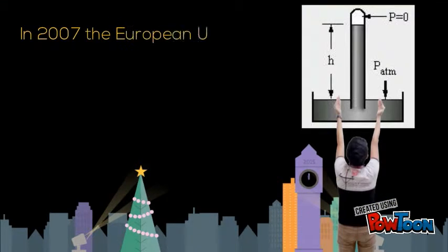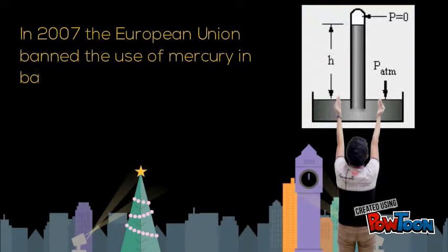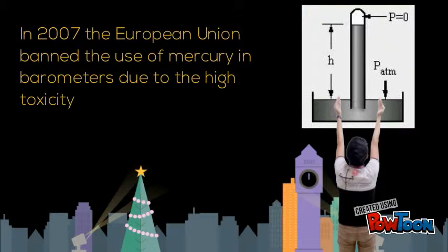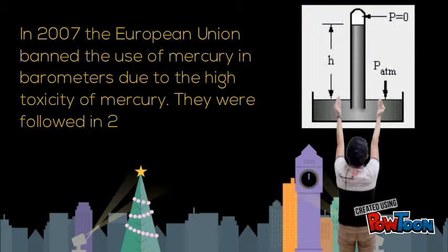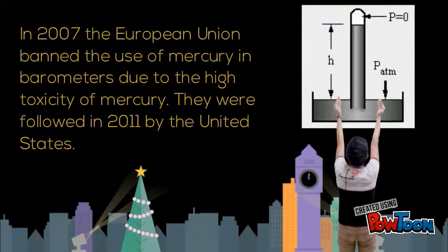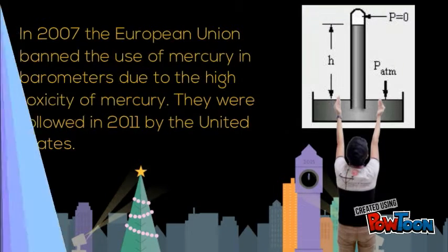In 2007, the European Union banned the use of mercury in barometers due to the high toxicity of mercury. They were followed in 2011 by the United States.